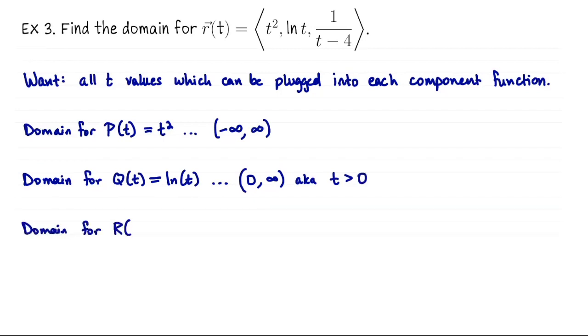Lastly, what is the domain for the z-component function R(t), capital R(t)? We would have a denominator of zero if we plugged in t equals 4. Every other number is fine. So our domain is from negative infinity up to but not including 4, together with from 4 to infinity. This symbol here is union. That means that you take these two pieces together. In other words, our domain is t not equal to 4.